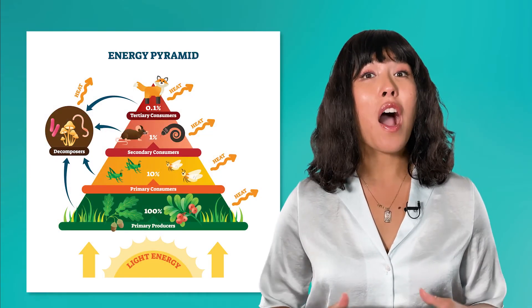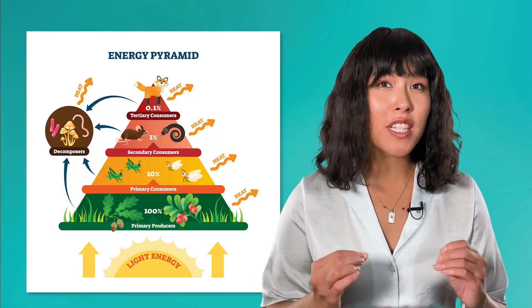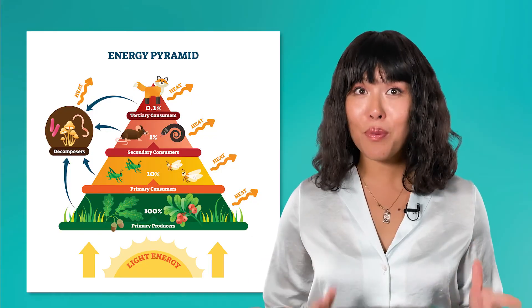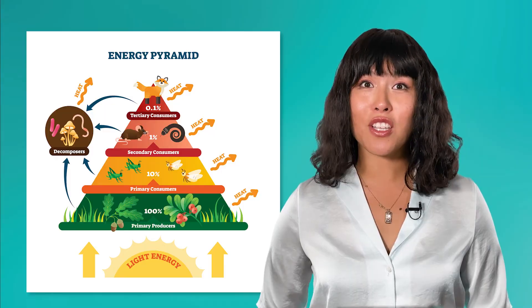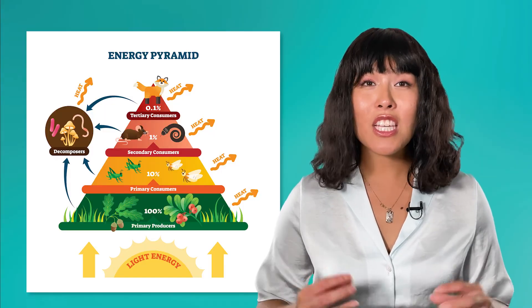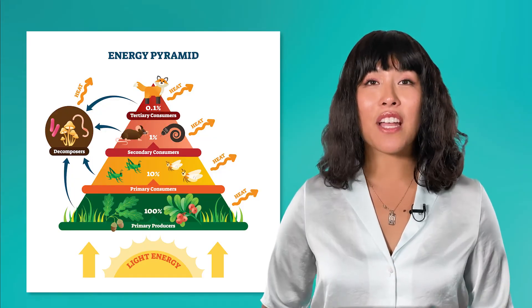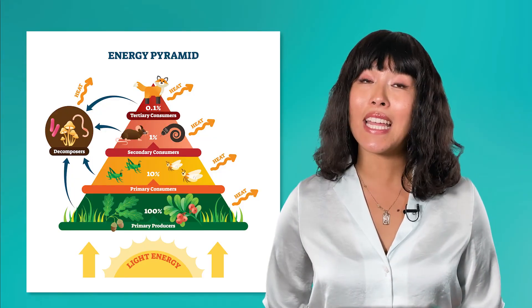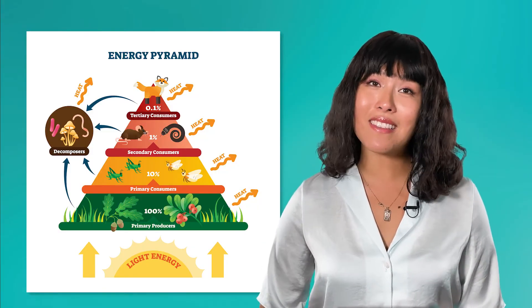You should notice that as you move up the food chain, the population size decreases. This is because as you move up a food chain, there is less energy available. In fact, each energy level only passes on 10% of its energy to the next level. This is because 90% of the energy consumed by an organism is used by that organism to grow and survive, leaving only 10% of the energy it has consumed remaining when it dies.